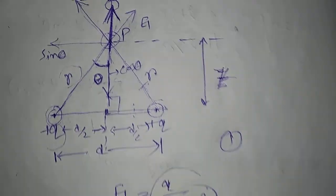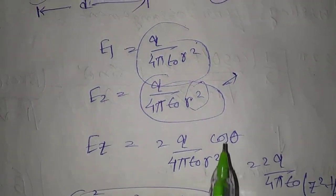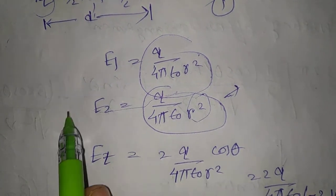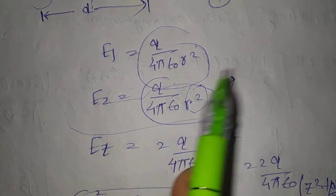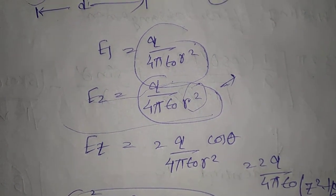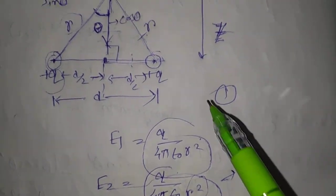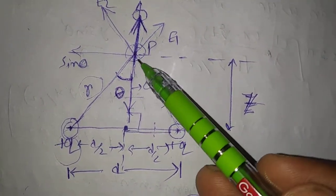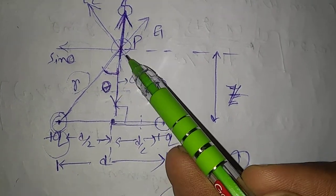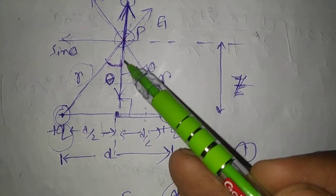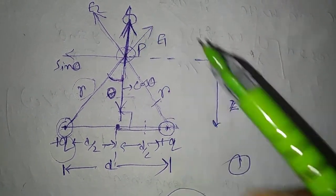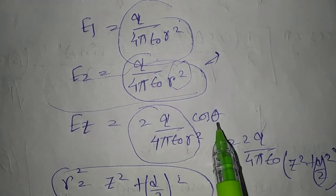Now let us calculate the resultant electric field. We are getting the same magnitude for E1 and E2. The resultant will be E1 plus E2, which equals 2Q by 4 pi epsilon naught r squared. Here we are taking the horizontal component because it makes an angle theta, and this component gives the cos theta contribution. So E_Z equals 2Q by 4 pi epsilon naught r squared times cos theta.